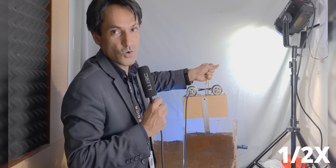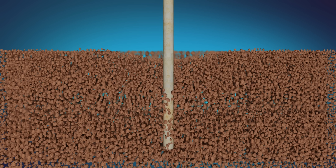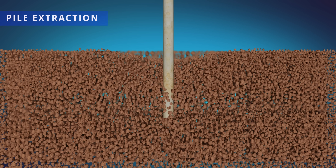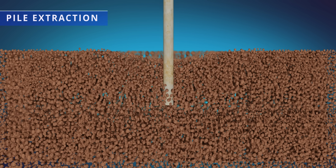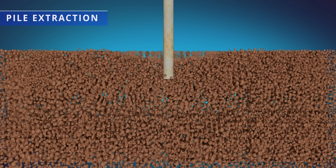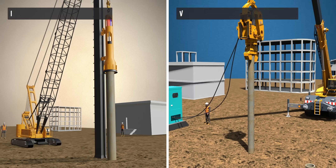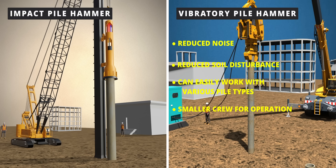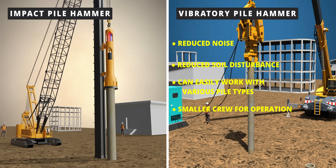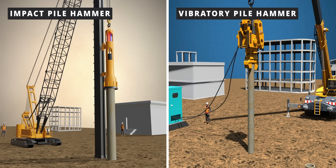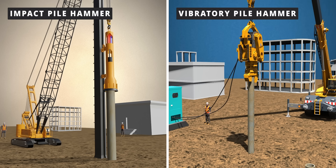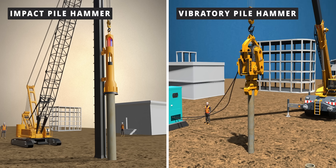The vibrohammer machines are also used for extracting the piles. The principle of operation is again the same — when the soil is in the fluidized state, it offers very low resistance. They have several advantages compared to the impact pile hammers. However, if the soil is highly dense or has many obstructions, the impact pile hammers are the right choice.